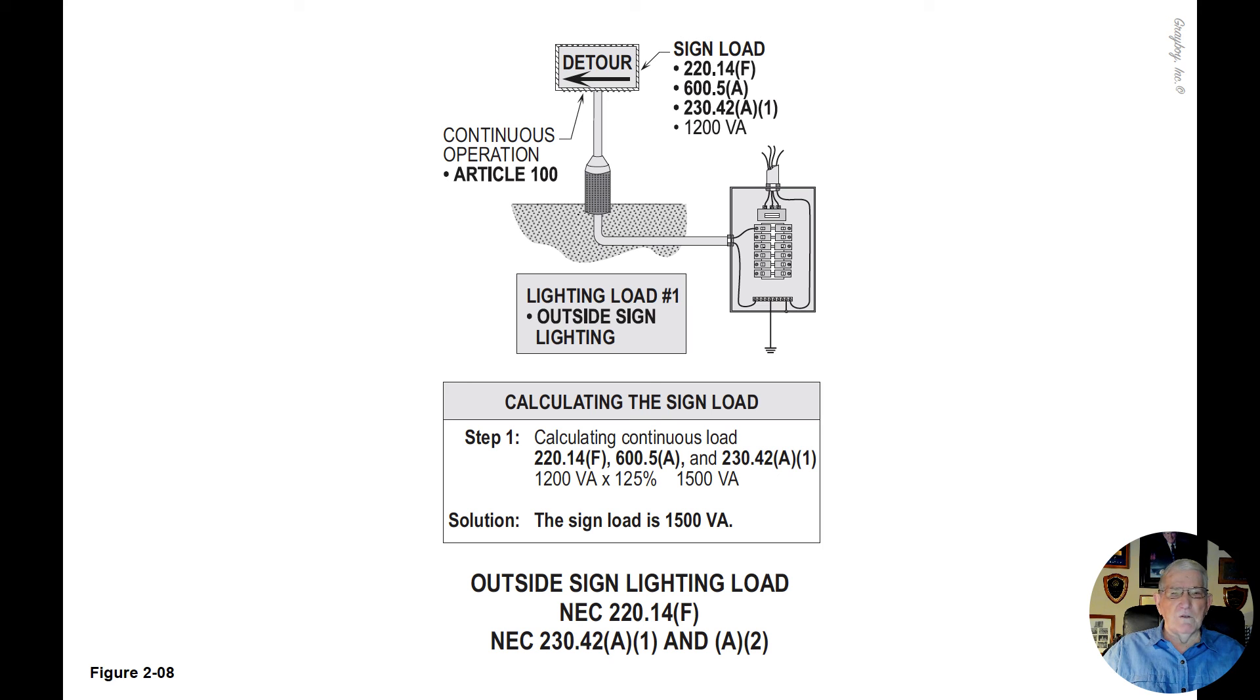Notice the 1200 VA is the minimum that we would prepare for a sign. If we know exactly what the sign would pull VA wise, then we would go ahead naturally and figure that in.